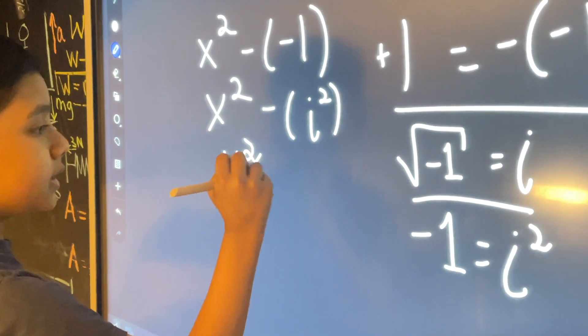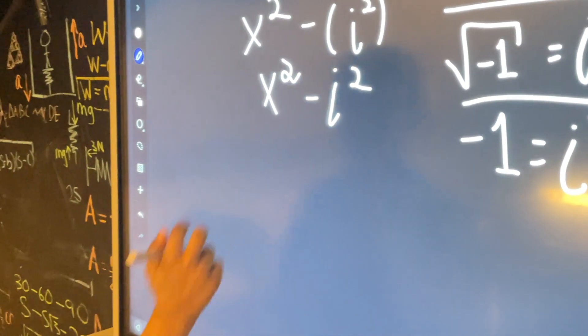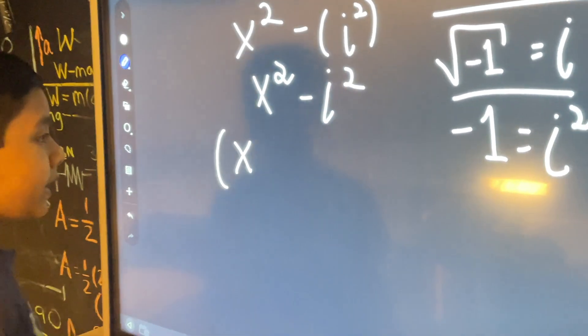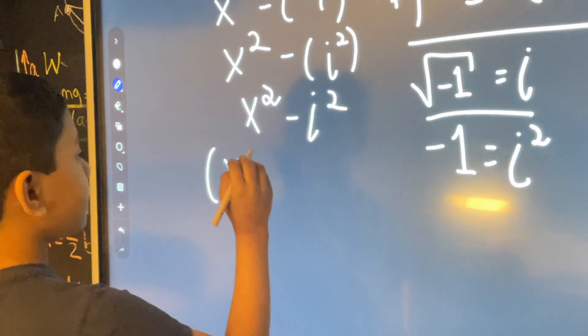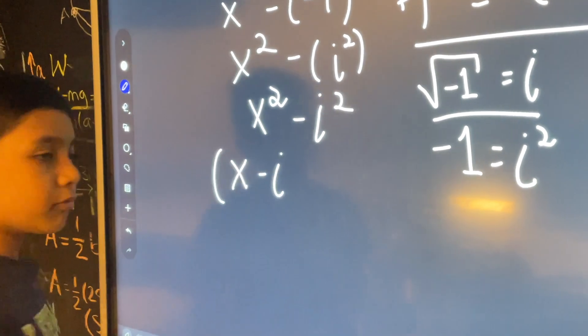Now, this is just a simple difference of squares, and we can factor it easily. You may not know how to do this, but I'll show you. You have x minus i. Remember,